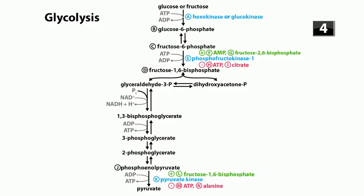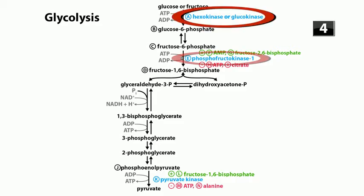Moving down the pathway: glyceraldehyde-3-phosphate goes to 1,3-bisphosphoglycerate, to 3-phosphoglycerate, to 2-phosphoglycerate, then to step J, phosphoenolpyruvate (PEP). The enzyme that converts PEP to pyruvate is step K, pyruvate kinase - another heavily regulated step. Fructose-1,6-bisphosphate (step L) stimulates pyruvate kinase - an upstream substrate stimulating the downstream mechanism. ATP (step M) and alanine (step N) inhibit pyruvate kinase, indicating high energy states. The key enzymes to know are steps A (hexokinase/glucokinase), E (PFK1), and K (pyruvate kinase).